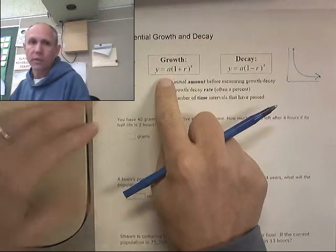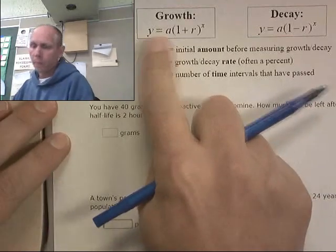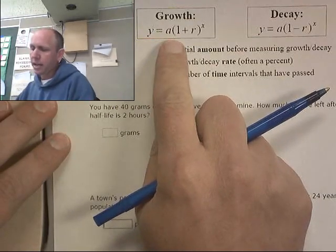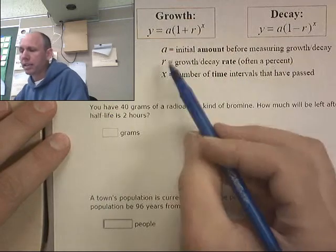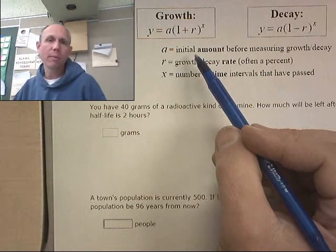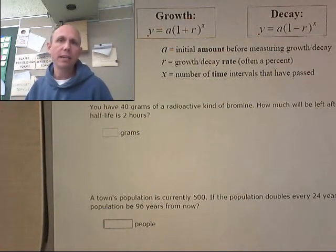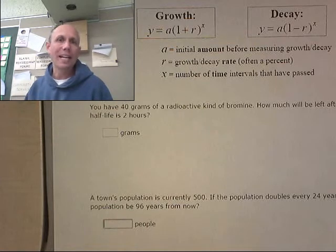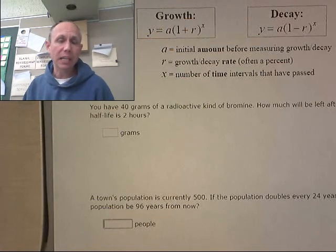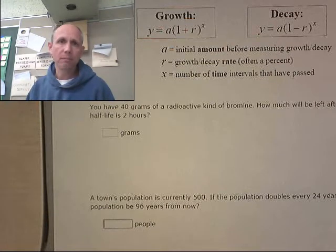So we'll be using y equals a, parenthesis one plus r to the x. Where a, and it's the same thing for decay. A is the initial amount of something I start with. So maybe I have an initial amount of people in a town or bacteria in a petri dish, or an initial amount of money in the bank, or some isotopes, some atomic, you know,